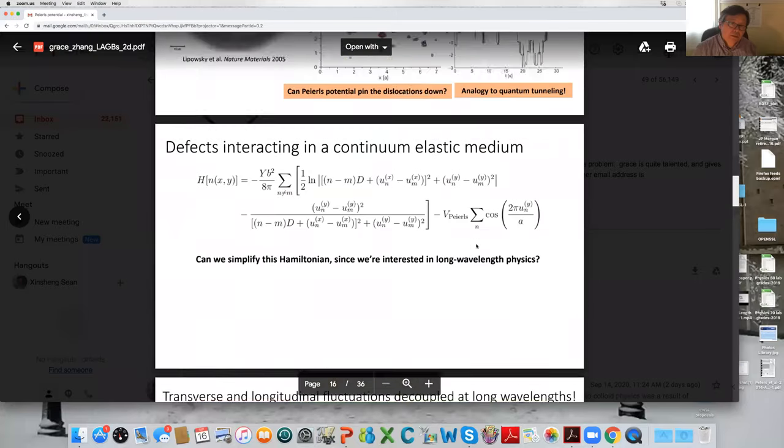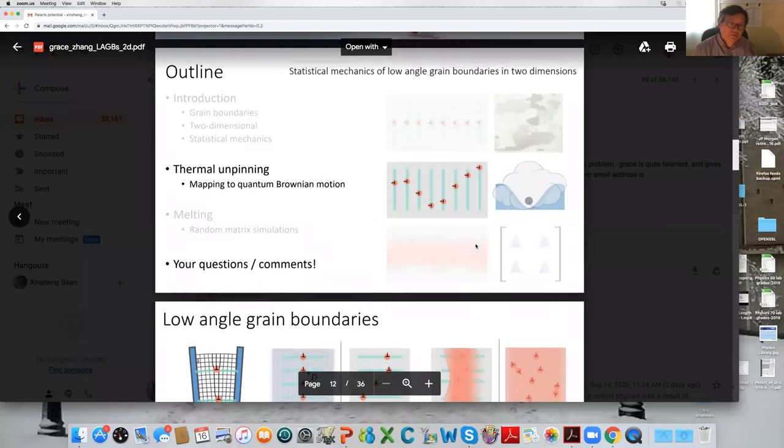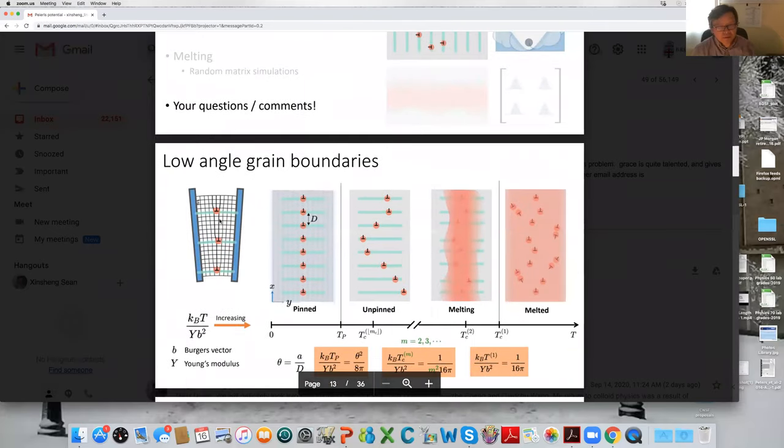Okay, so Mike, if we go back to David's and Grace's question, let's say you have a system, let's say you created in a very large wedge. So then you have one low angle grain boundary. And then you start raising temperature. So then the question is, what would be the low energy excitation that would destroy this lattice?